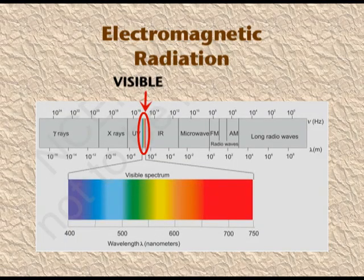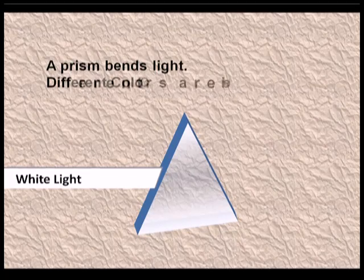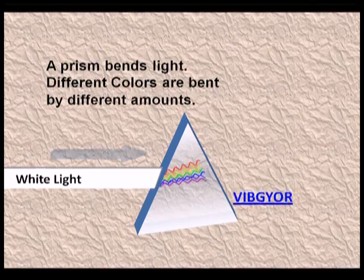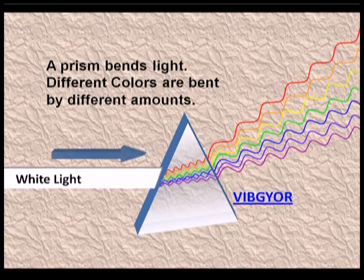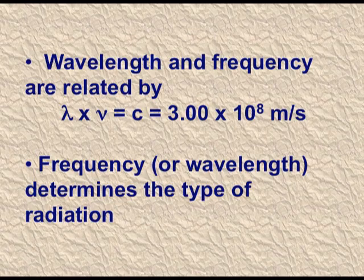You can see the very small portion of the electromagnetic radiation which is known as the visible region, and you can also see the spectrum of the visible region. When white light is passed through a prism, it disperses into seven colours — VIBGYOR. Wavelength and frequency are related as lambda times nu equals c, which equals 3 × 10⁸ metres per second. Frequency or wavelength determines the type of radiation.